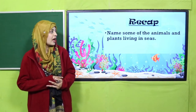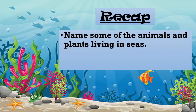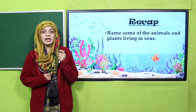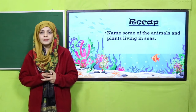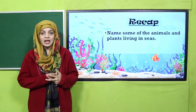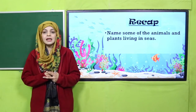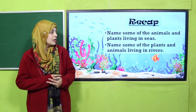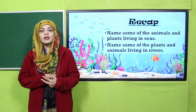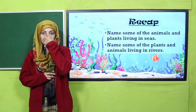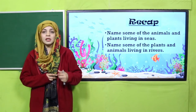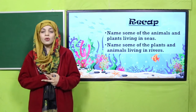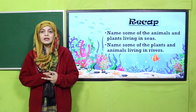Name some of the animals and plants living in seas — the sea habitat. Very good: octopus, jellyfish, whales, sharks. Now some plants: mangroves, kelps. Now name some of the plants and animals living in rivers. Animals: trout, salmon. Plants: river grass.